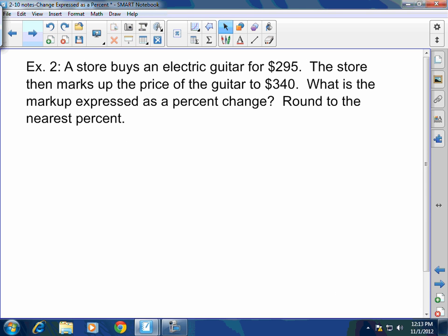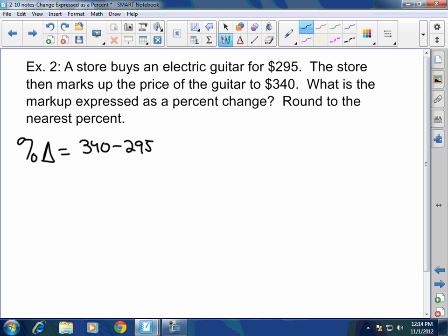Example two. Store buys an electric guitar for $295. The store then marks up the price of the guitar to $340. What is the markup expressed as a percent change? Well, percent change equals new, which is $340, minus old, which is $295, over old, which is $295, times $100.